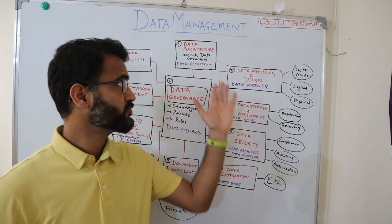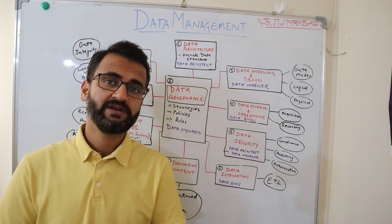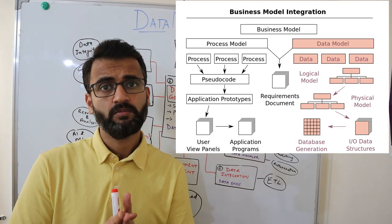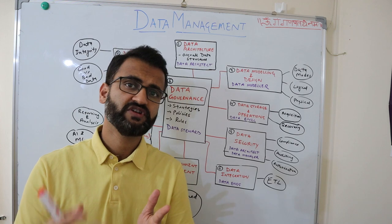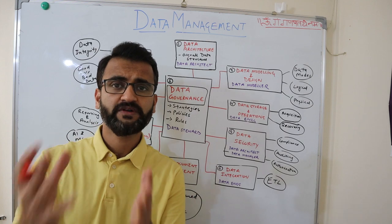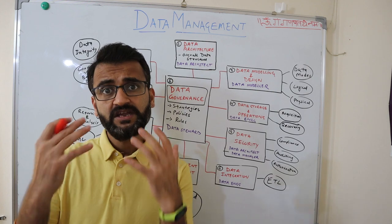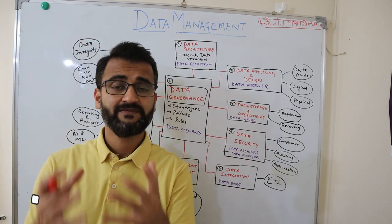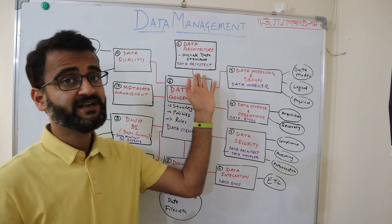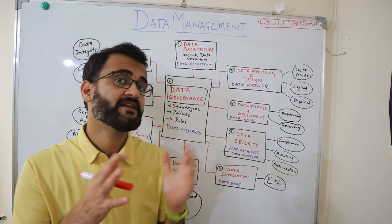A related branch to data architecture is data modeling and design. Within data modeling and design, the conceptual, physical, and logical data models are defined, and based on that particular data model, all data extraction, acquisition, and storing happens. For example, if a new project needs to develop a report, they need to consult the data modeler to understand what kind of data model fits the use case — and that model should be in line with the data architecture strategy defined by the data architects.